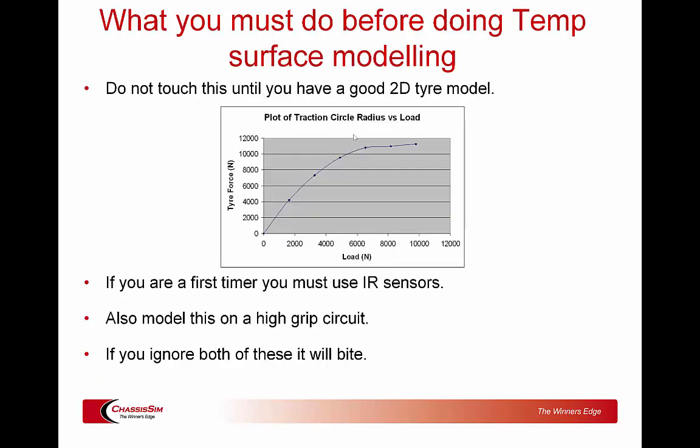First, the do-not-pass-go items. If you want to do tyre temperature surface modelling, don't even think about it until you've got a really good 2D model of the tyre — where the traction circle radius is a function of load only. Also, if you're a first-timer, you must use IR sensors — that's a no-brainer. The other thing when doing this for the first time: use a high-grip circuit. We're talking circuits like Road America, Eastern Creek, Spa, Silverstone — circuits where you're pulling really big Gs — so you can see the full gamut of what the surface temp model is actually doing.